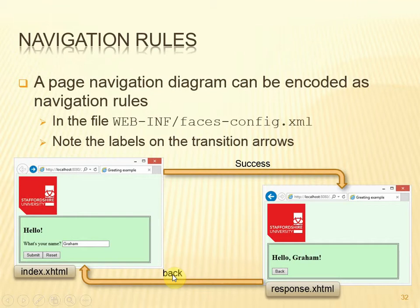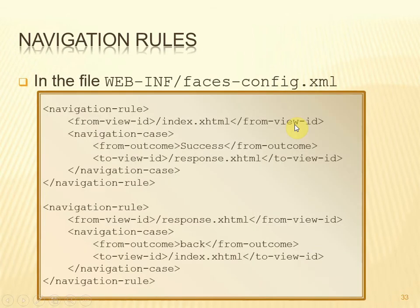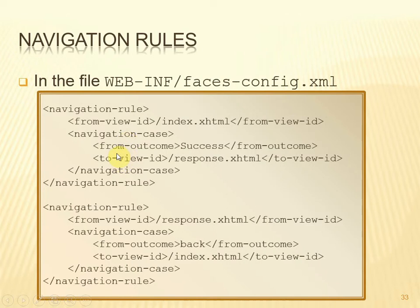We can encode these rules in a file called WEB-INF/faces-config.xml. We can have as many navigation rules as we want. For each navigation rule we specify the view we're coming from, and then we can nominate as many navigation cases as we want. This one says: when coming from index.xhtml, in the case that the outcome is 'success', we go to response.xhtml. Because we can have as many navigation cases as we like, we can have several outcomes from a particular view.